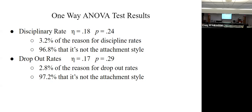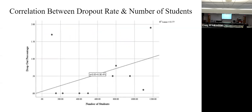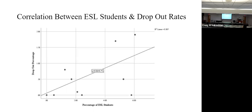Even though research supports positive attachment style, the data didn't come back to support it. So those two hypotheses were not supported. But what I did find was a correlation between the dropout rate and the number of students in the school — the higher the student count, the population of the school, the higher the dropout rates increased. I don't know why that happened, but there was a correlation there. And this one doesn't really come as any surprise: there is a correlation between the number of ESL kiddos and dropout rates. If you can't speak English and we're teaching everything in English in school, then they get frustrated and drop out.